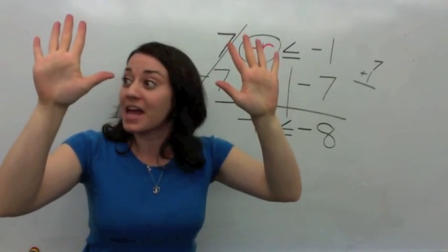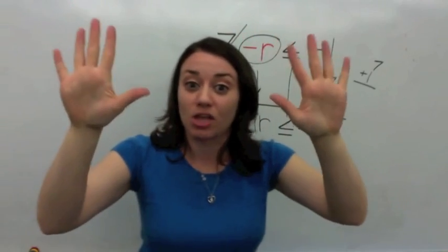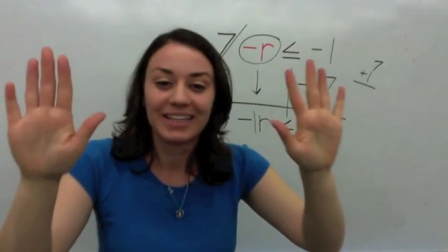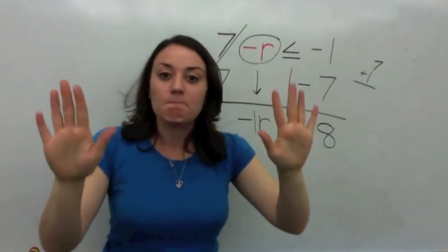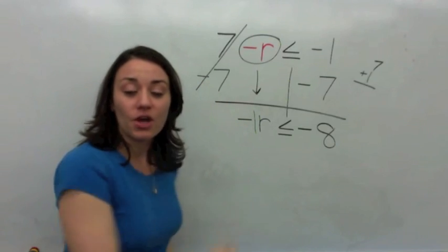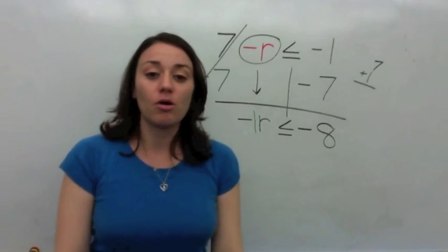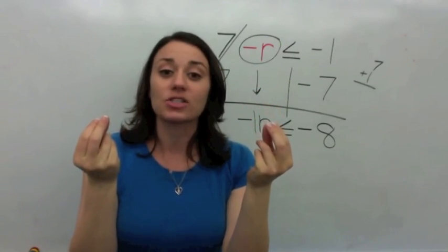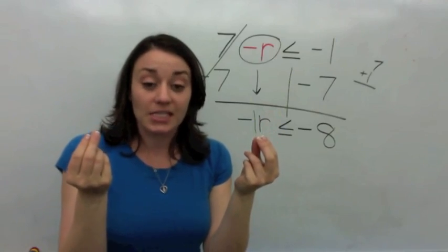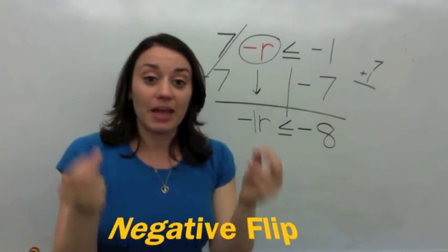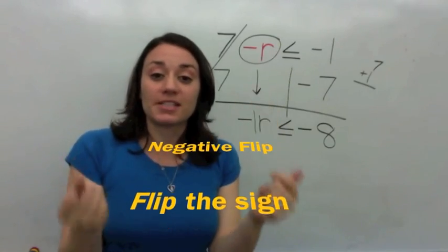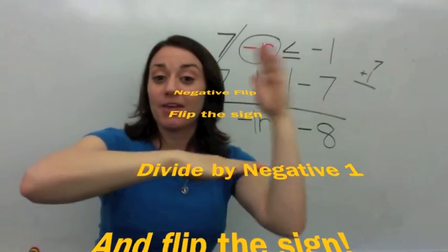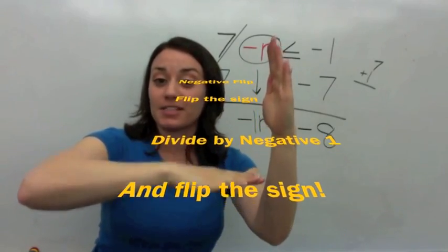Stop what you're doing, drop everything and sing this song. My daughter made this song up — it's very good. When you see a negative, you're going to hold up your hands like this and sing this song. It goes like this: Negative flip! Flip the sign. Divide by negative 1 and flip the sign.